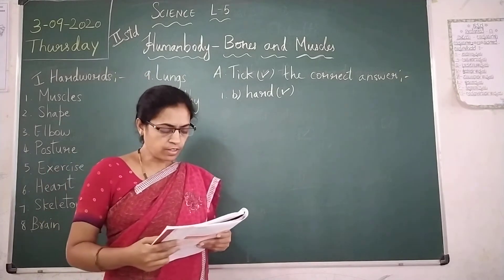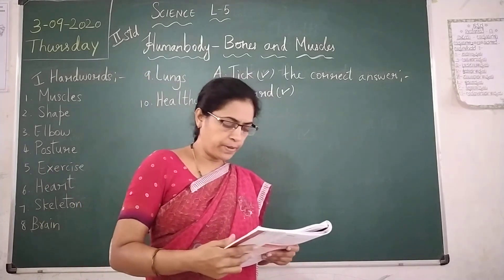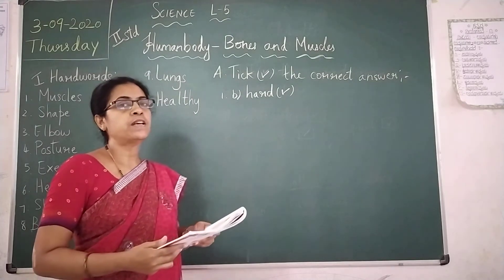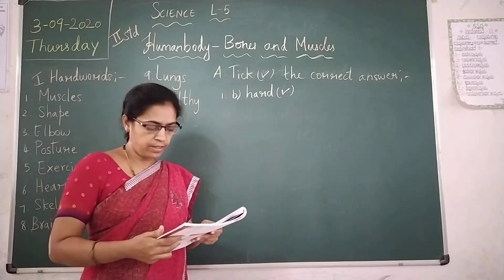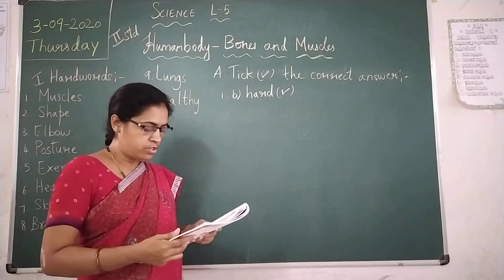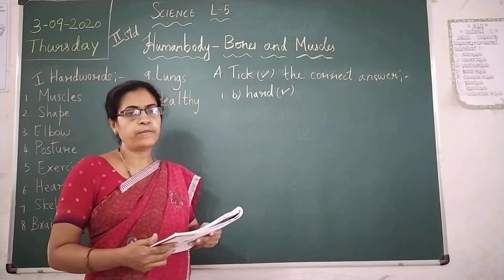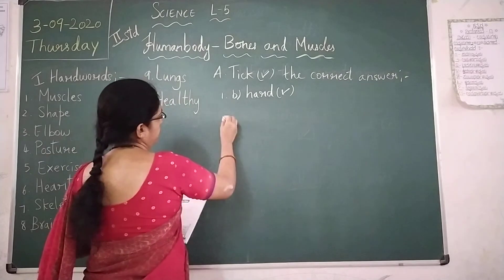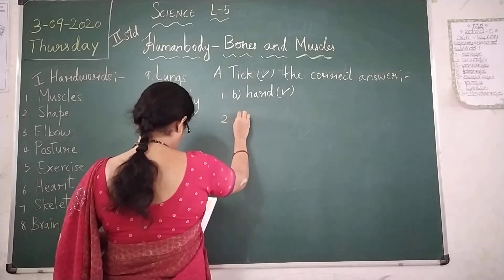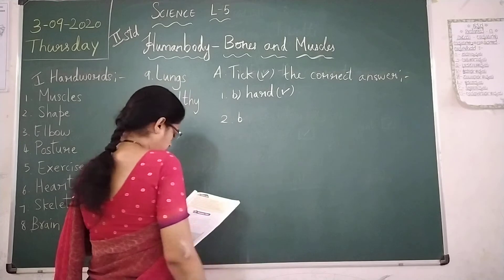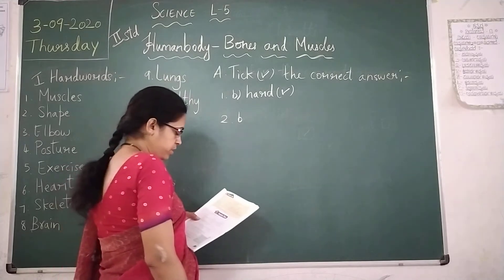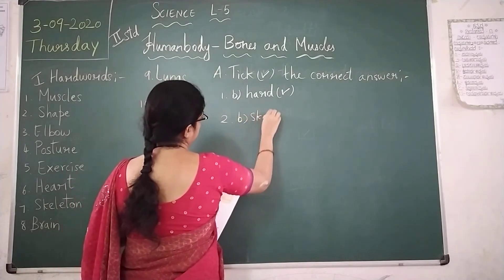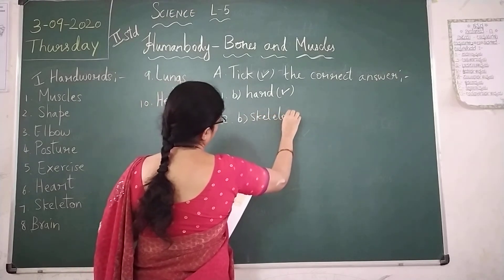Second question: the framework of bones present in the human body is called — joint, skeletal, or muscle? So option B is correct. The framework of bones present in the human body is called skeletal — S-K-E-L-E-T-O-N.